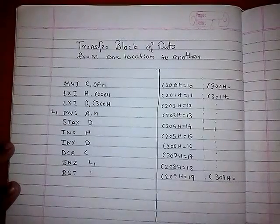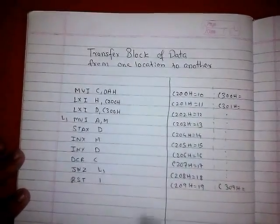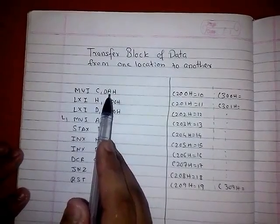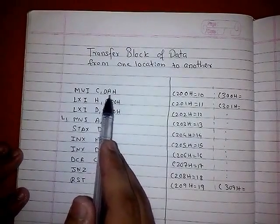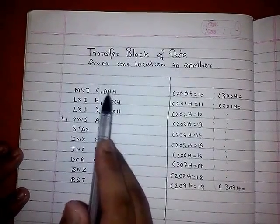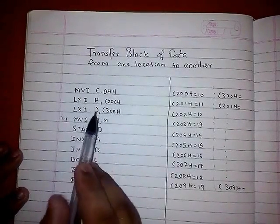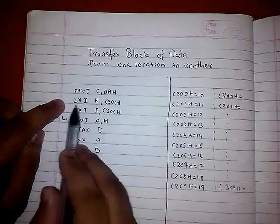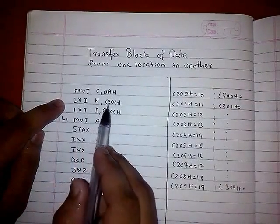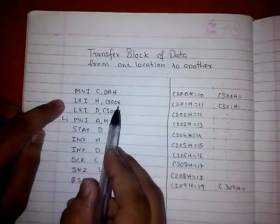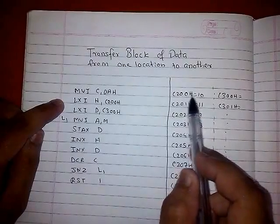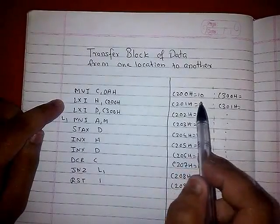So that the program doesn't go further. First, we will do MVI C, 0AH — we will move the data 0AH into register C. Next, we will initialize this memory location: LXI H, C200H. We will initialize this memory location in the HL pair.